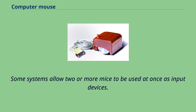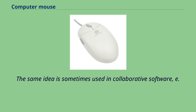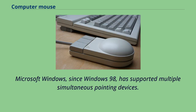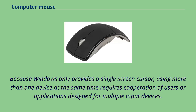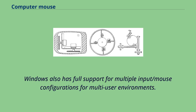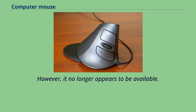Some systems allow two or more mice to be used at once as input devices. Late 1980s home computers such as the Amiga used this to allow computer games with two players on the same computer, and the same idea is used in collaborative software to simulate a whiteboard that multiple users can draw on. Microsoft Windows, since Windows 98, has supported multiple simultaneous pointing devices. Because Windows provides only a single screen cursor, using more than one device at the same time requires cooperation of users or applications designed for multiple input devices. Starting with Windows XP, Microsoft introduced an SDK for developing applications that allow multiple input devices with independent cursors and input points.